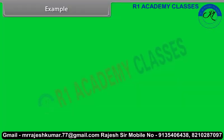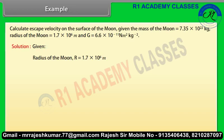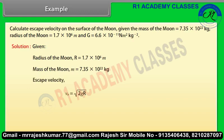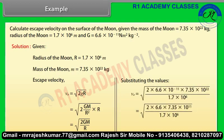Example. Let's take an example of escape velocity. Calculate escape velocity on the surface of the moon. Given: radius of the moon R = 1.7 × 10⁶ m, mass of the moon M = 7.35 × 10²² kg. Escape velocity = √(2gR). By substituting the values, we get escape velocity = 2.4 × 10³ m/s.